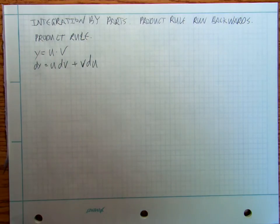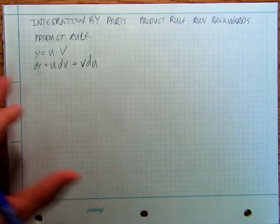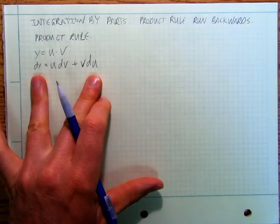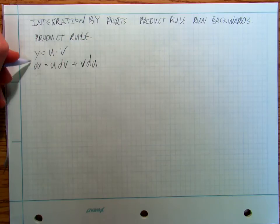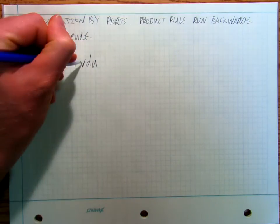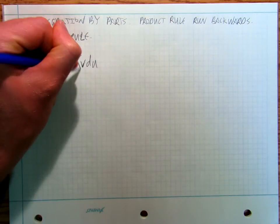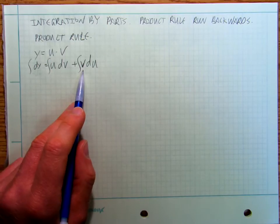Go back and watch my product rule videos for a refresher on that. Okay, now one of the things that I've said many times is that anything that you do to one side of the equation, you can do to the other side of the equation. So I can take the integral of every single one of these and if I take the integral of every single one of these, I still have an equation.